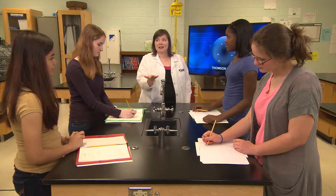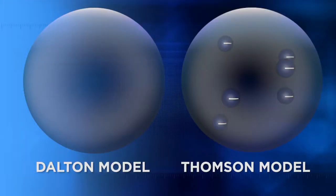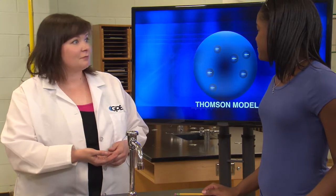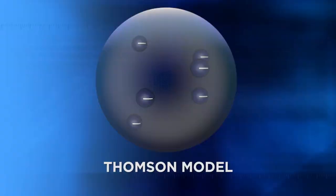Now let's take a look at the next model of the atom. How does this model look different or similar to the Dalton model? It's still a circle, but it's different because it has negative charges spread throughout it — it's still a solid. So this is JJ Thomson's model of the atom. It's still spherical, but instead of being completely solid, it's now made up of different parts known as subatomic particles because they're inside the atom.